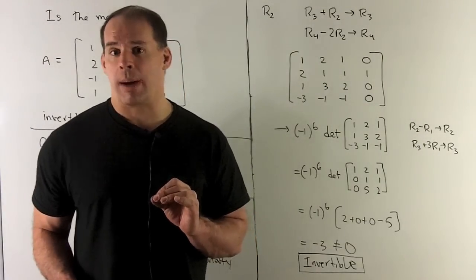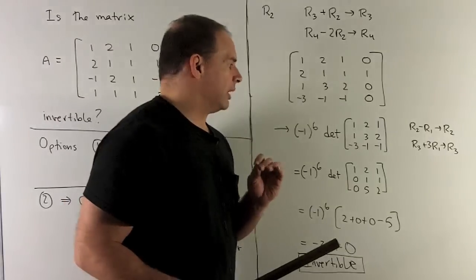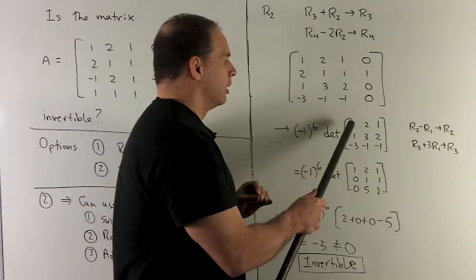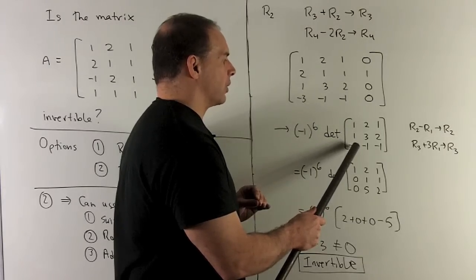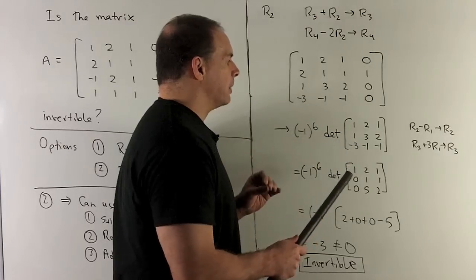But instead, let's do some more row operations. So here, what can we do? I want to turn this 1 here into a 0, this minus 3 into a 0. Then what happens?